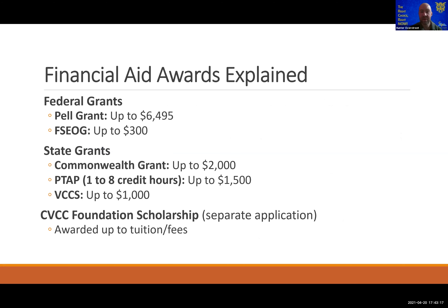Some of the different types of awards given: we have grants, which is aid you don't have to pay back. Obviously the Pell Grant is the big one, and then there's FSEOG. We also have state grants — PTAP and the Commonwealth Grant — and our CVCC Foundation Scholarship, which is money raised and given to students. For the Foundation Scholarship, you do have to complete a separate application and also do the FAFSA. So even if you feel like your parents make too much money or you won't qualify for the Pell Grant, go ahead and fill out the FAFSA — it's required for the scholarship as well.